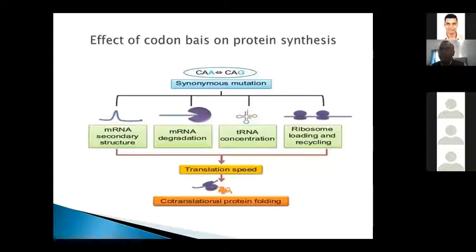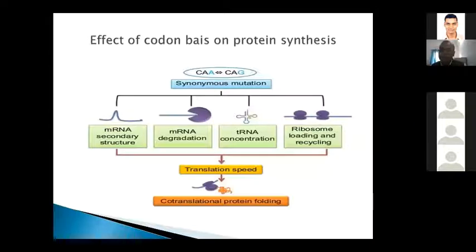Synonymous mutations affect ribosome loading and recycling for each codon, which ultimately leads to a reduction in translation speed and thus protein synthesis. This may also result in defective proteins being synthesized.